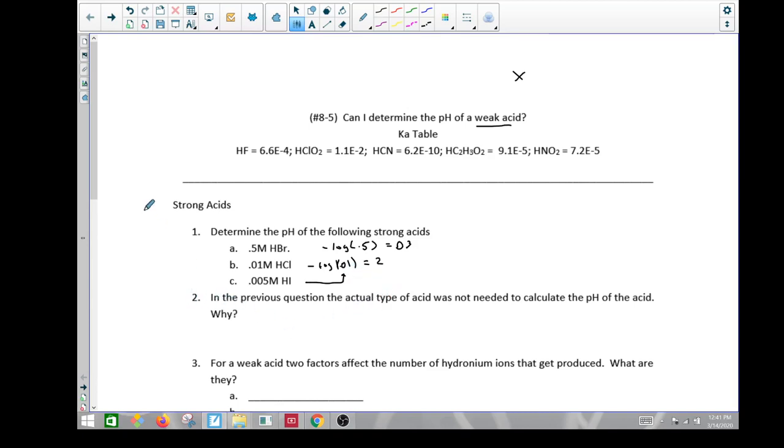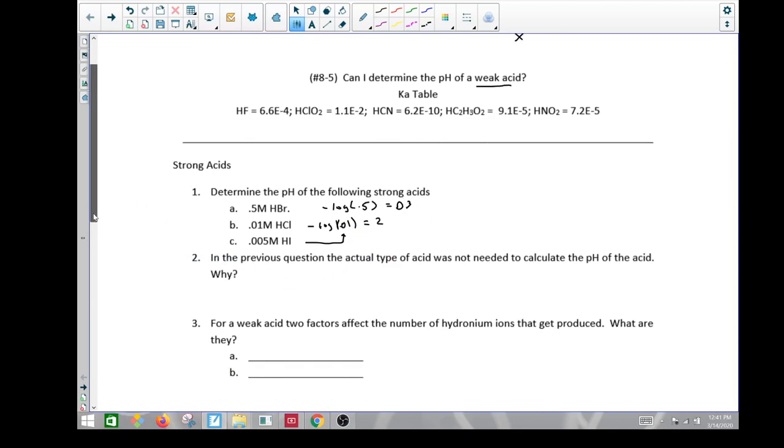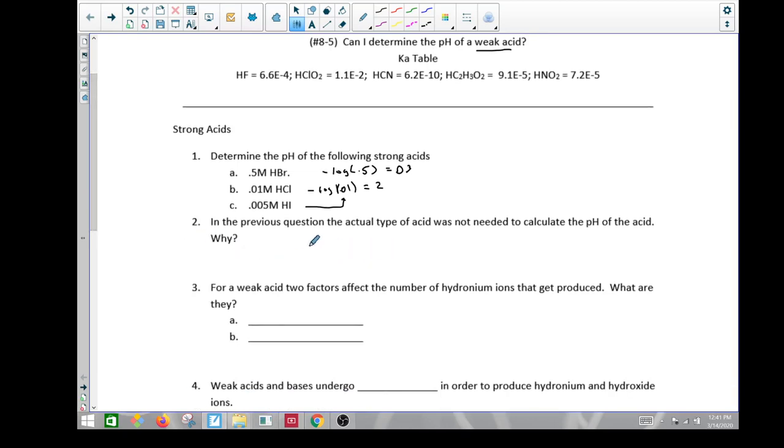In the previous question, why is it not important to know even the type of acid? Well, we just need to know that it's strong. There are 6 strong acids and they go 100% to product. So I don't really care about anything else.